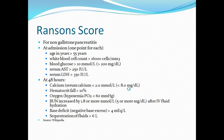You don't need to know all components or how to calculate the Ranson score, but you need to know the different criteria that go into it: age, white blood cell count, AST, LDH, blood glucose, calcium, etc. You don't need to know the numbers, but it's important to know this is an important predictor of mortality for pancreatitis.